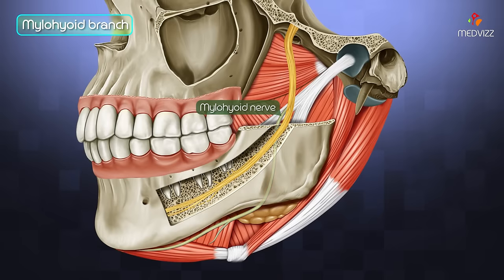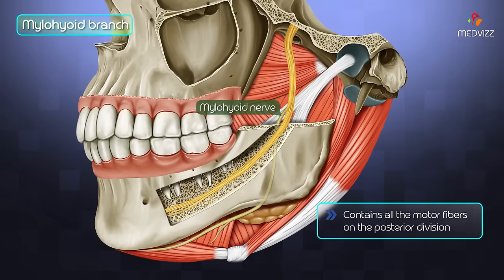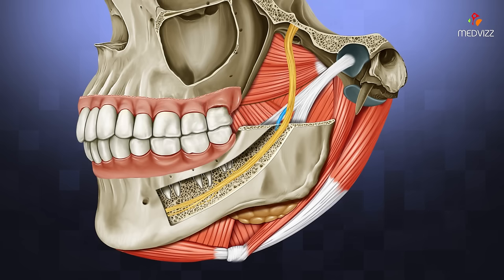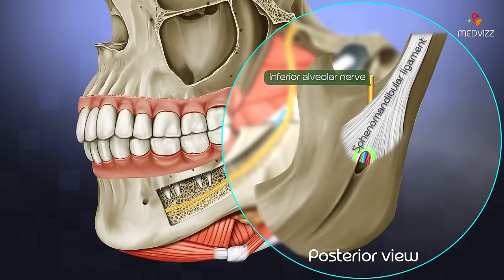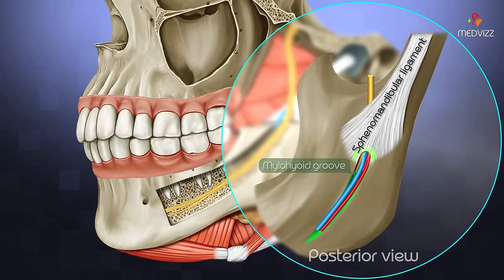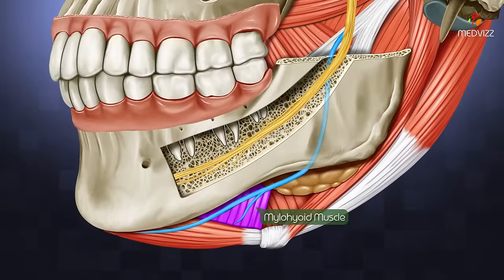Branches. The myelohyoid branch contains all the motor fibers of the posterior division. It arises just before the inferior alveolar nerve enters the mandibular foramen. It pierces the sphenomandibular ligament with the myelohyoid artery, runs in the myelohyoid groove, and supplies the myelohyoid muscle and anterior belly of the digastric.